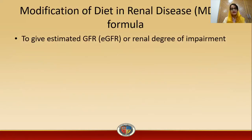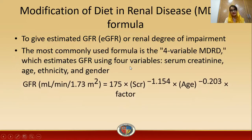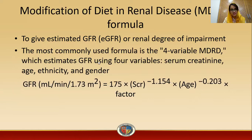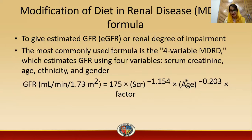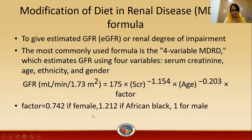The Modification of Diet in Renal Disease (MDRD) formula estimates GFR or degree of renal impairment. The most commonly used is the four-variable MDRD, which estimates GFR using serum creatinine, age, ethnicity, and gender. The formula is: GFR (ml/min/1.73 m²) = 1.175 × serum creatinine^(−1.154) × age^(−0.203) × factor, where the factor is 0.742 for females, 1.212 for Black patients, and 1 for males.